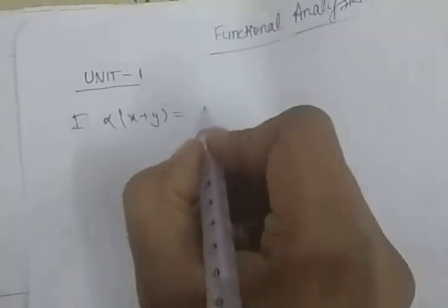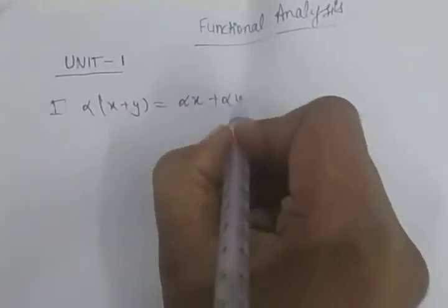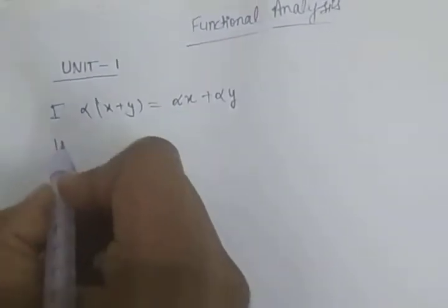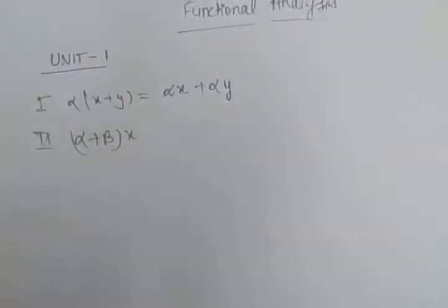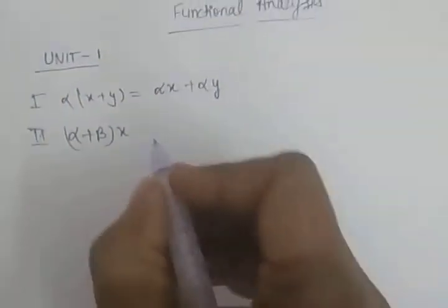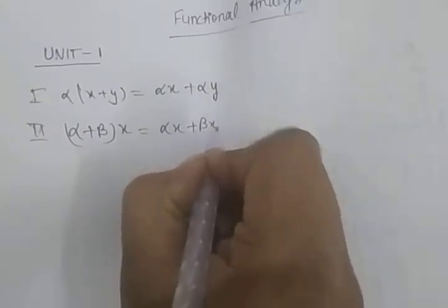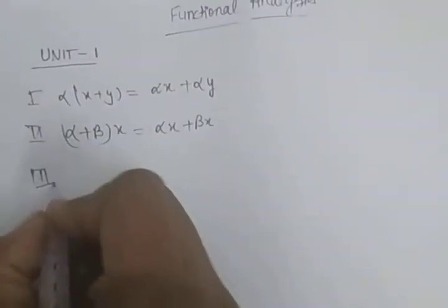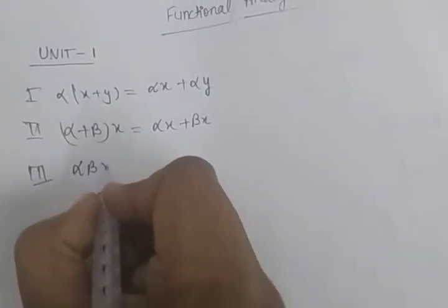Now reviewing the four properties: first property — alpha into (X + Y) will give alpha X plus alpha Y. Second property — when we take two scalars alpha plus beta into vector X, it gives alpha X plus beta X.